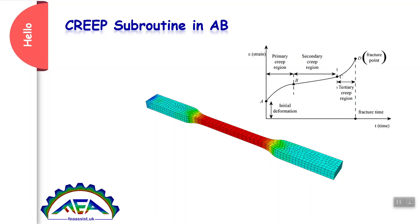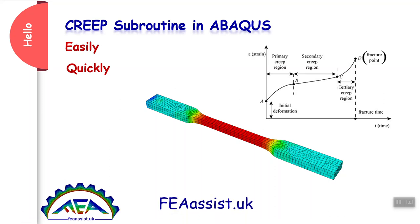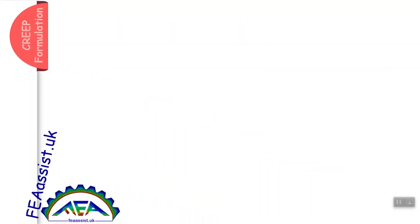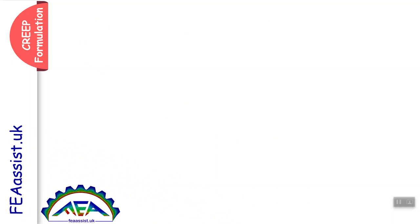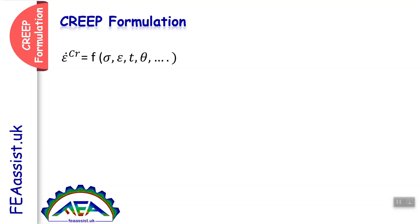Hello. You want to learn the CREEP subroutine in Abaqus easily and quickly? CREEP is a subroutine to define time-dependent plasticity or viscoplastic behavior of materials. Stay with us. In the creep formulation, creep strain rate is a function of stress, strain, time, temperature, or other variables.